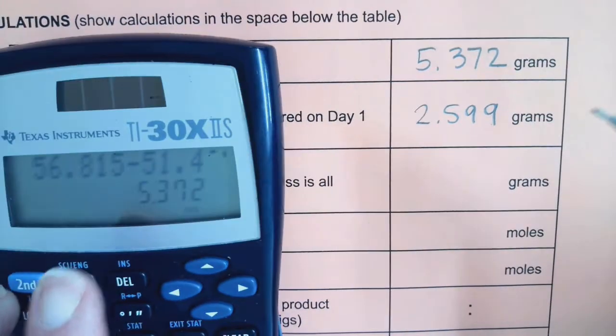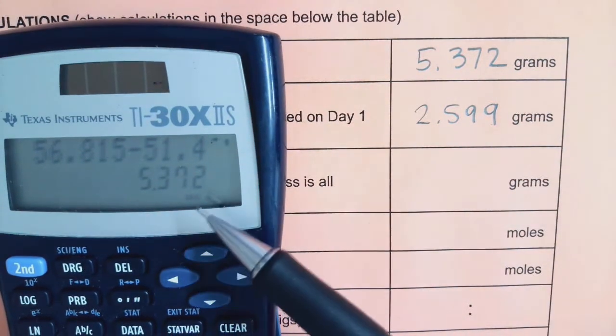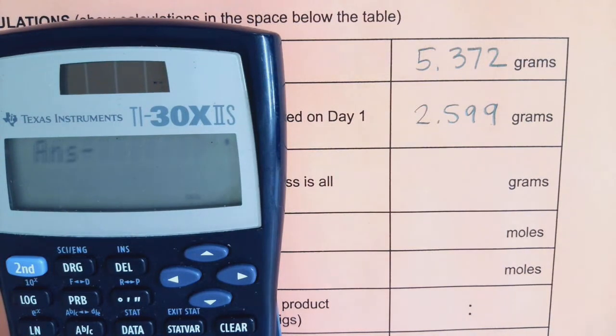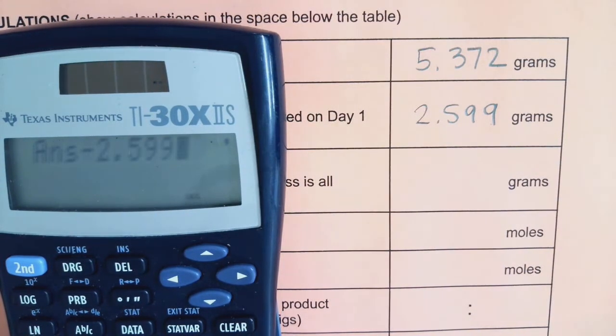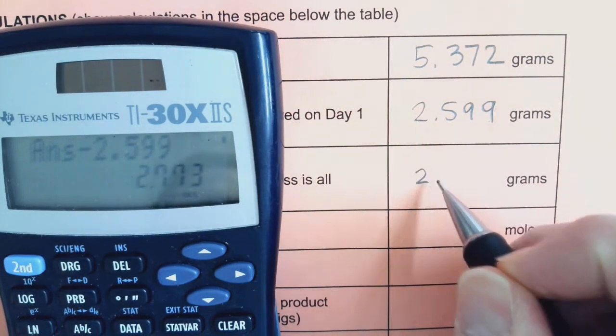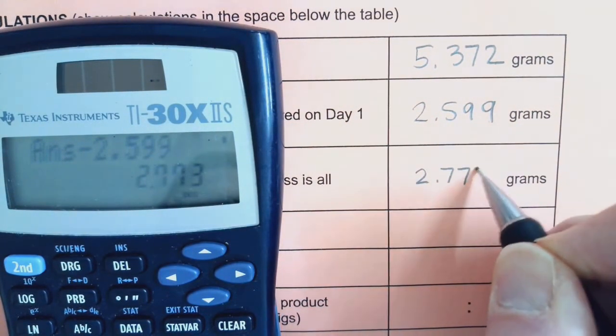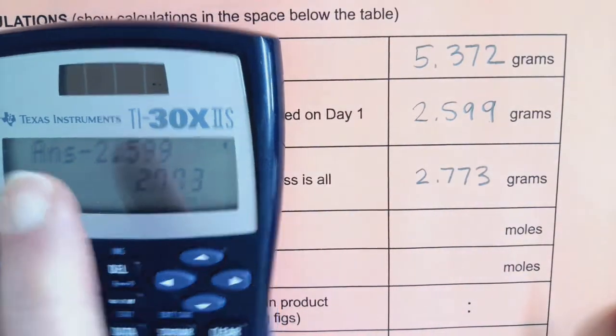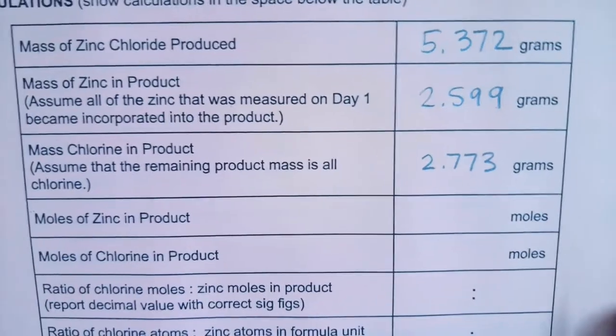So again, I'm going to go to my calculator. I already have 5.372 in there. I'm going to subtract the zinc. And now I have my mass of chlorine.